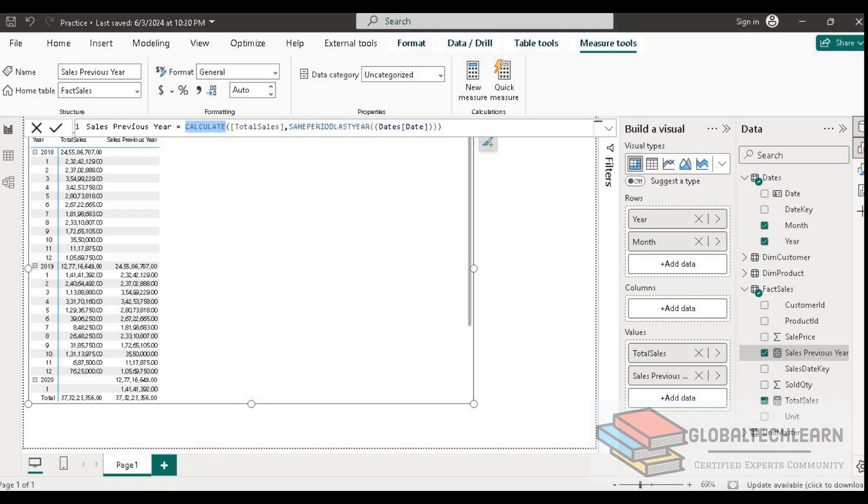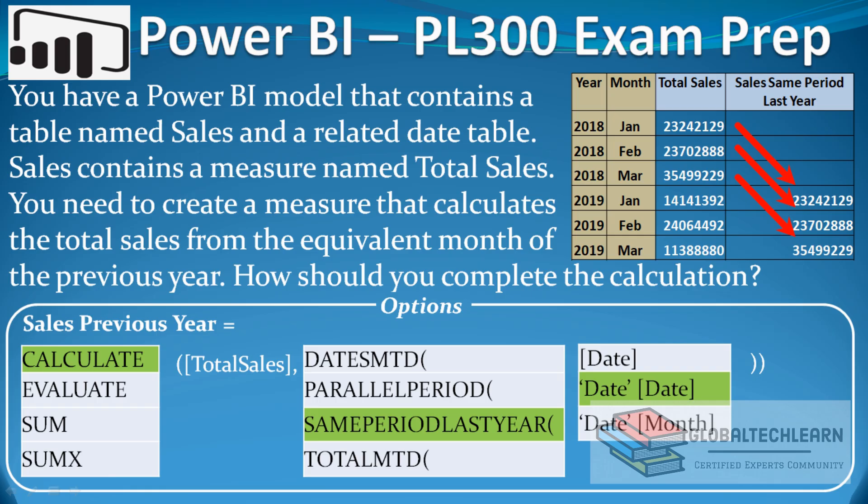Let's go back to the question. In the expression, first we select CALCULATE, and then we select SAMEPERIODLASTYEAR. Under SAMEPERIODLASTYEAR we provide the Date field from the Date table.